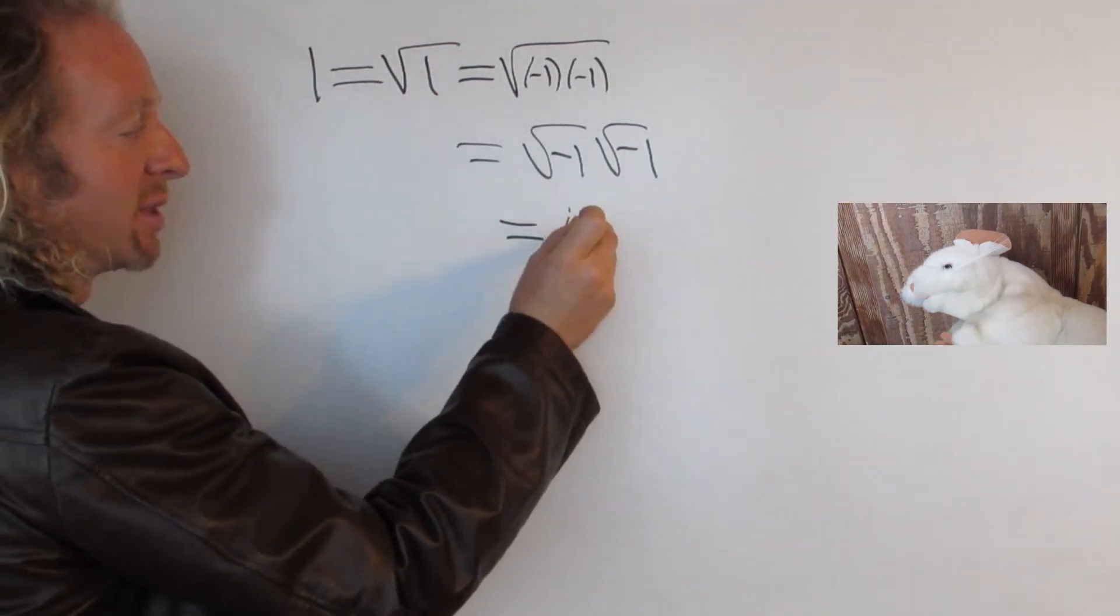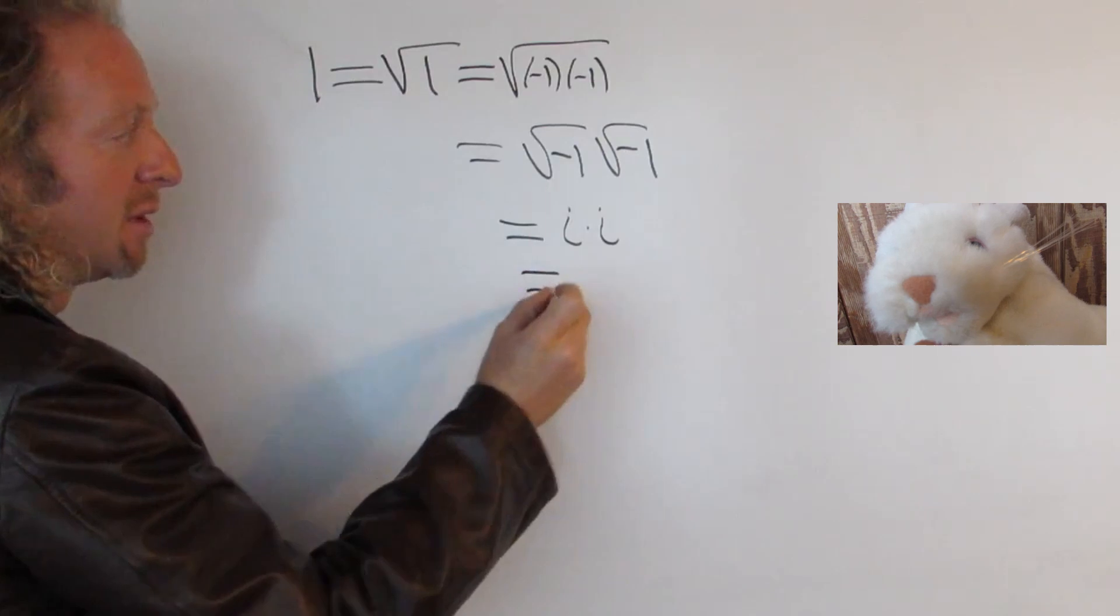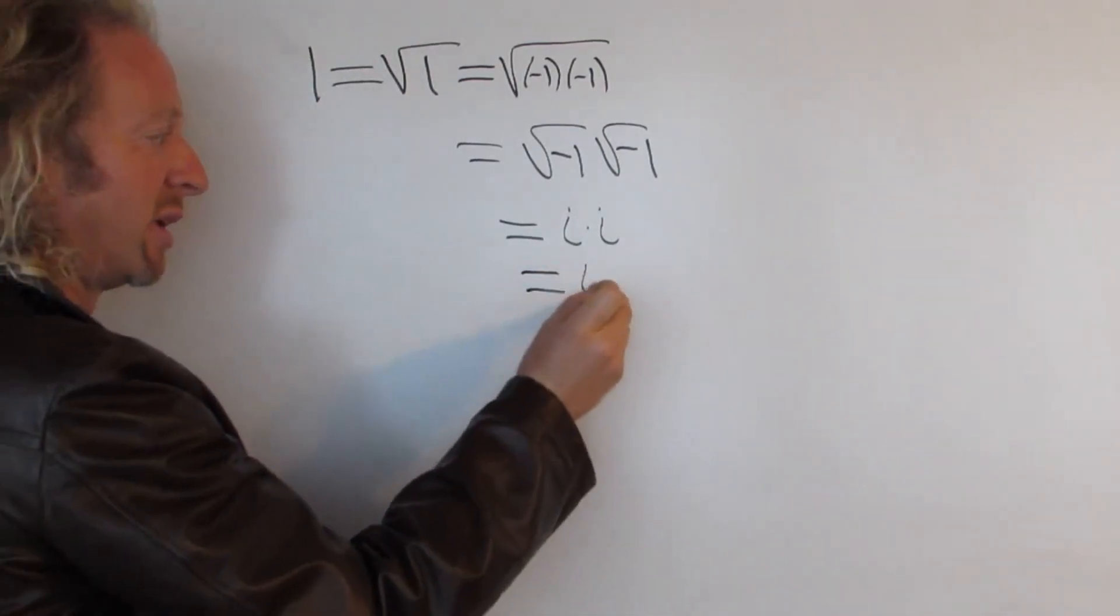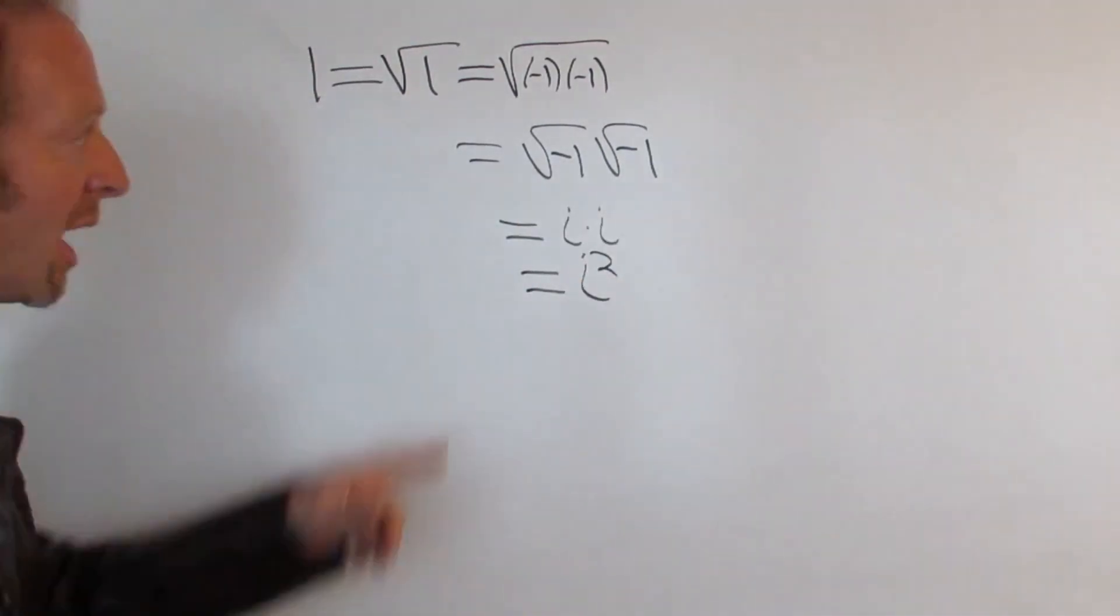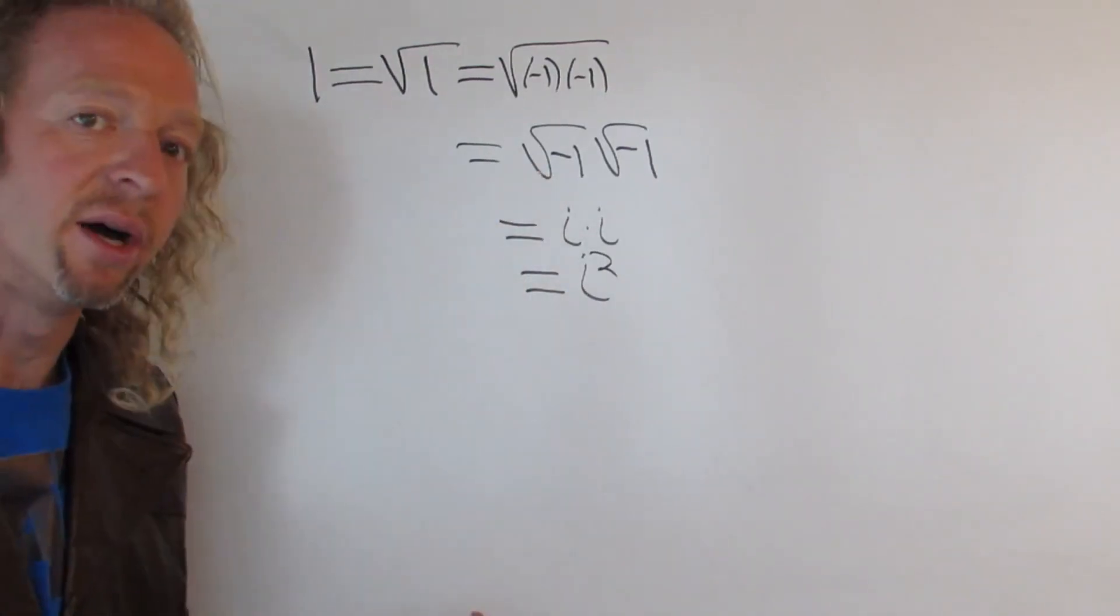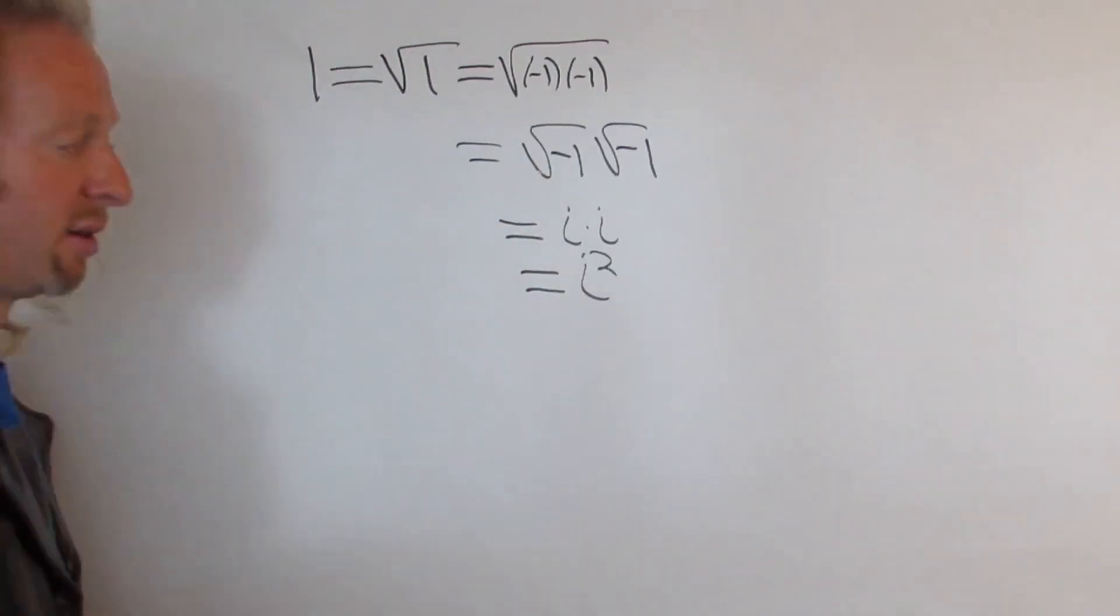This is i times i. That's the same thing as i squared. And we know when we square i, because i is the square root of negative 1, we just get negative 1.